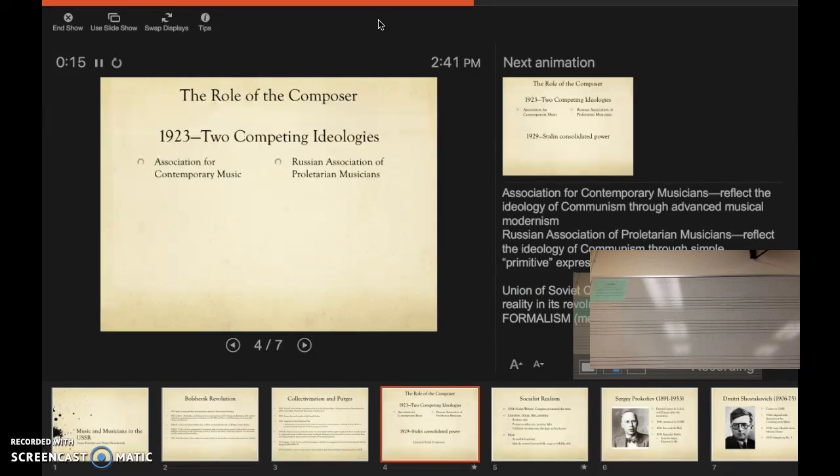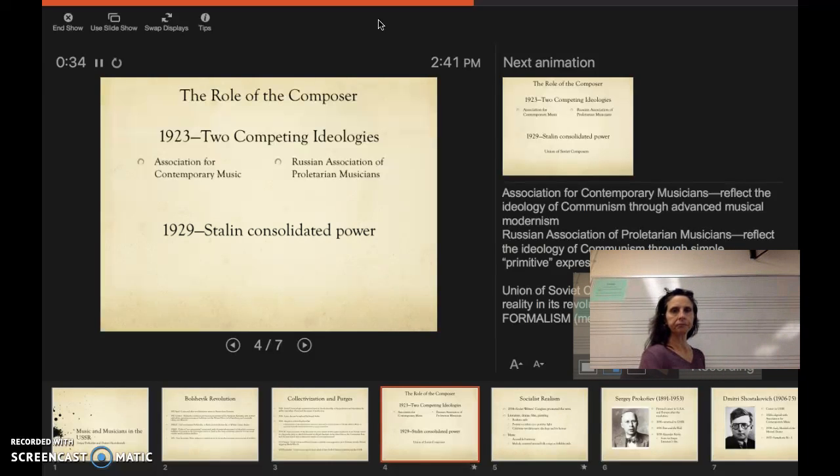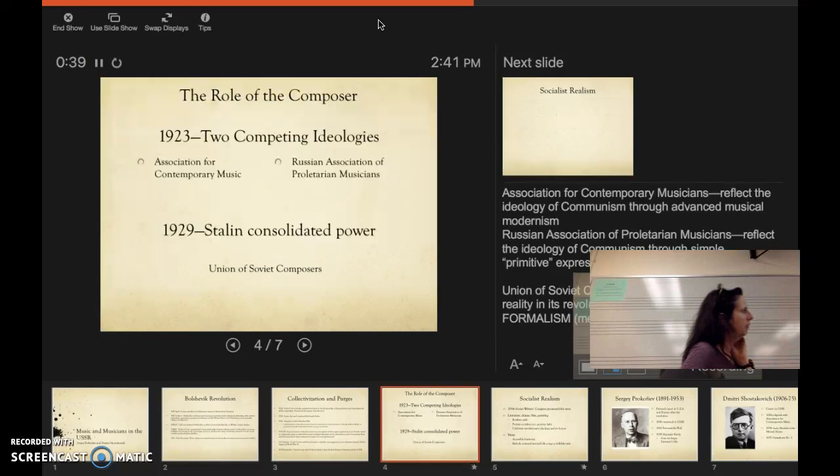Shostakovich early on was associated with the Association for Contemporary Music, a very modernist group influenced by what was happening in Europe. Then there was the Russian Association of Proletarian Musicians, which had a very political take on what they were doing and needed to be associated with what was good for the country. In 1929, after Lenin's death, Stalin consolidated power.